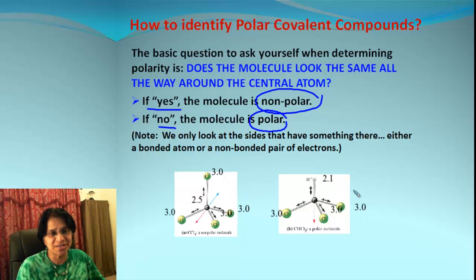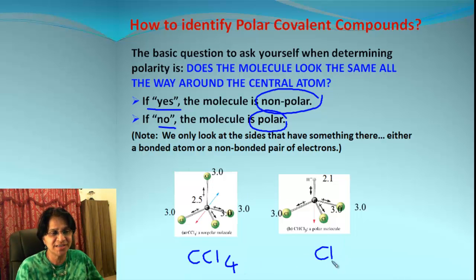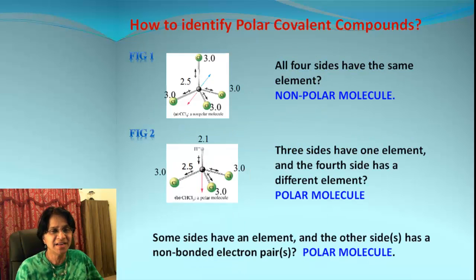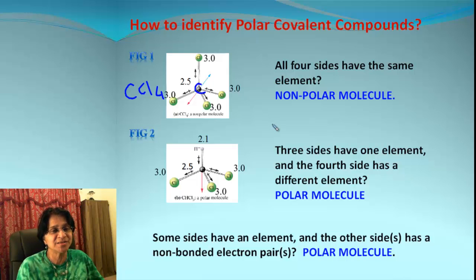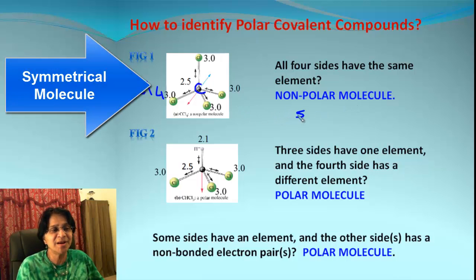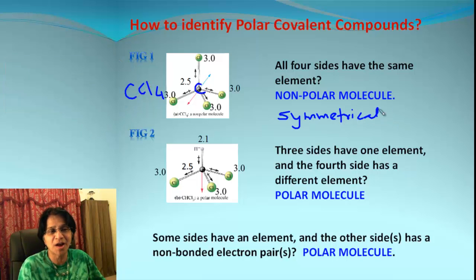Let's look at these two structures. This structure is carbon tetrachloride CCl4 and this structure is CHCl3. We need to identify which one is polar and which one is non-polar. CCl4 has central atom carbon and all the remaining atoms are chlorine. So all four sides of the atom have exactly the same element, which means the molecule will be symmetrical — and that makes it a non-polar molecule.